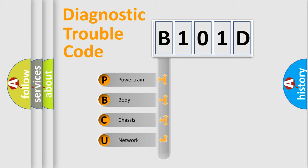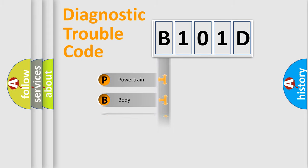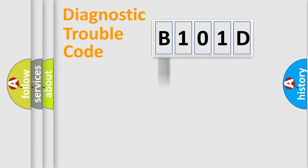We divide the electric system of an automobile into four basic units: Powertrain, body, chassis, and network. This distribution is defined in the first character of the code.